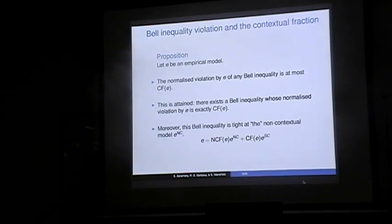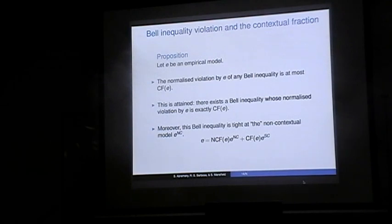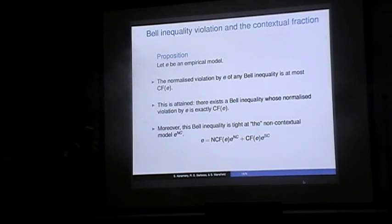Moreover, this bound is actually obtained — there exists a Bell inequality whose normalized violation by the empirical model is exactly its contextual fraction. So the contextual fraction is essentially the maximal normalized violation achieved by any Bell inequality. Furthermore, this Bell inequality is tight at the non-contextual part of the model. Whenever you can write E as a convex combination of a non-contextual and a strongly contextual model, this Bell inequality will be tight for that model.